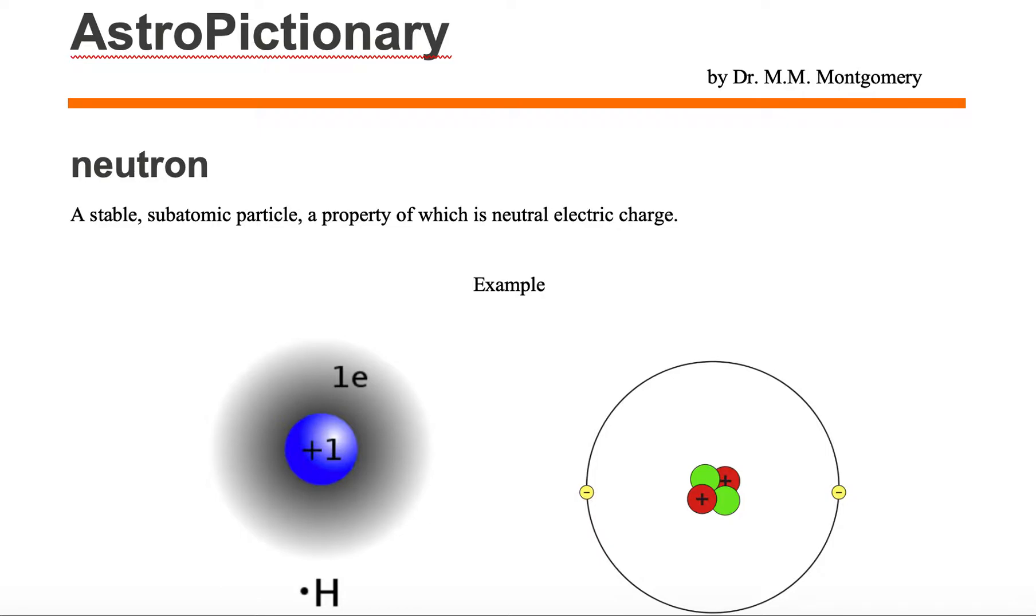A neutron is a stable subatomic particle, a property of which is neutral electric charge. Let's look at some examples.